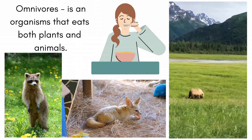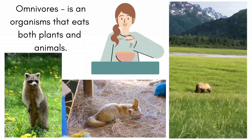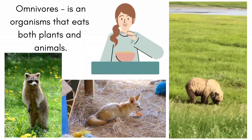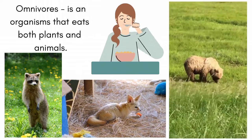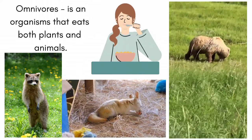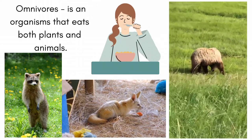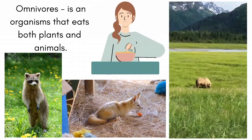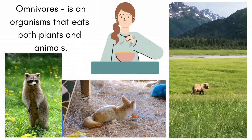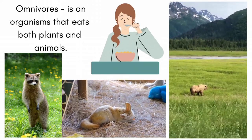Omnivores play an important part of the food chain, a sequence of organisms that produce energy and nutrients for other organisms. Every food chain consists of several trophic levels, which describe an organism's role in an ecosystem. Omnivores generally occupy the third trophic level alongside meat-eating carnivores.